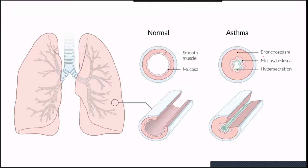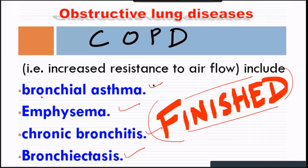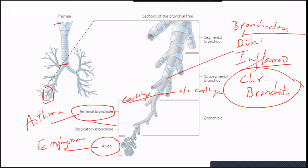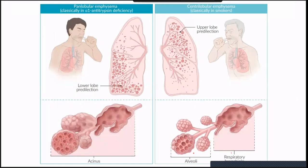Asthma, which I taught you, involves bronchospasm, mucosal edema, and hypersecretion — that's the narrowing. This has been taught very clearly by Dr. Ahmad. You can see the alveolar pathology. The respiratory bronchiole and alveolar involvement together is emphysema; the terminal bronchiole is asthma. You can see the panlobular and centrilobular types very clearly.